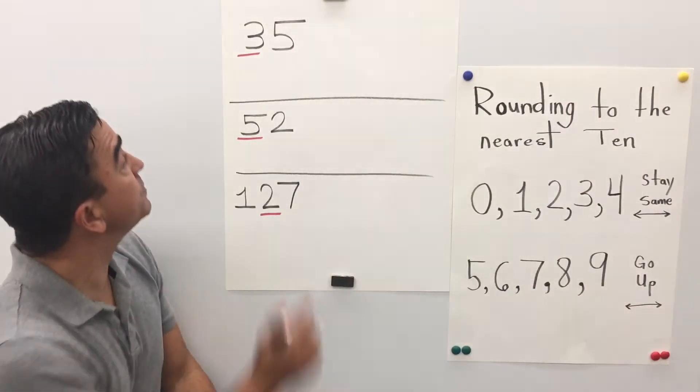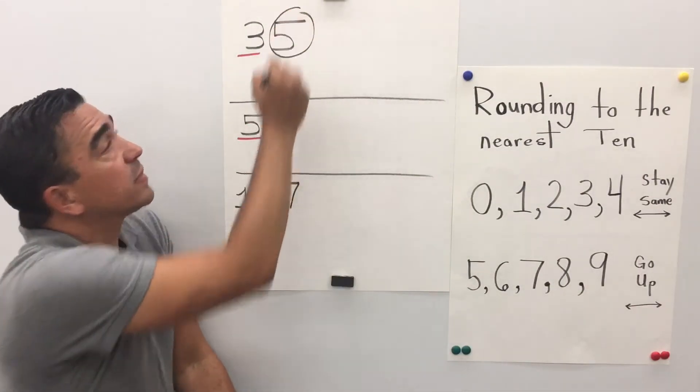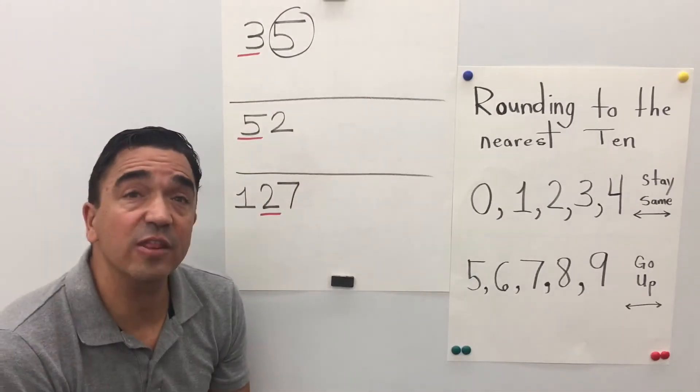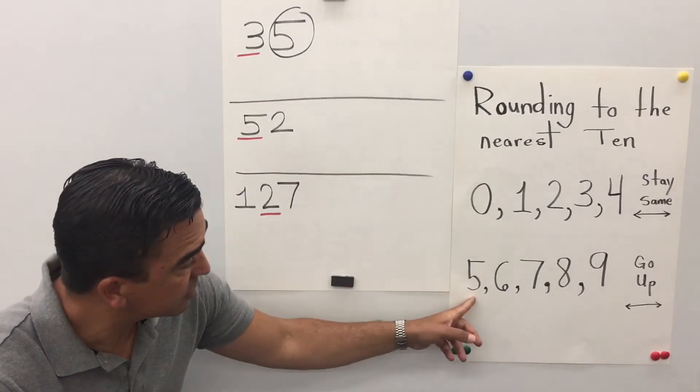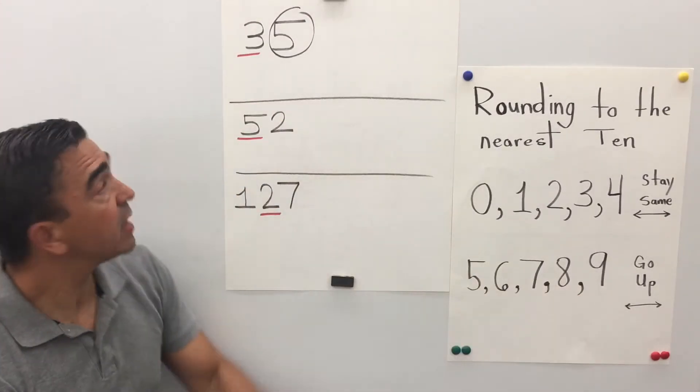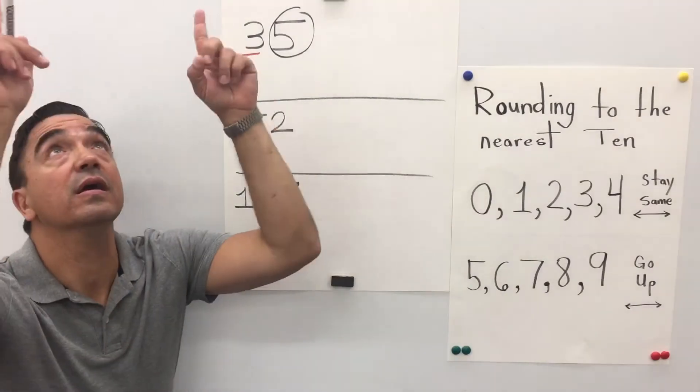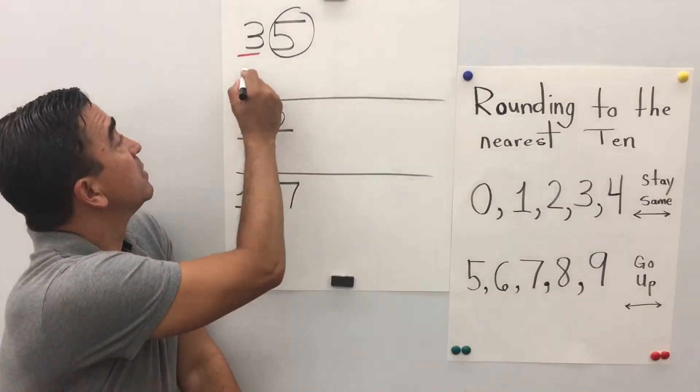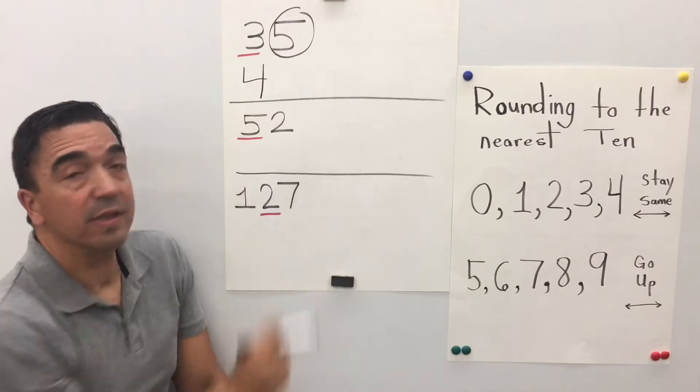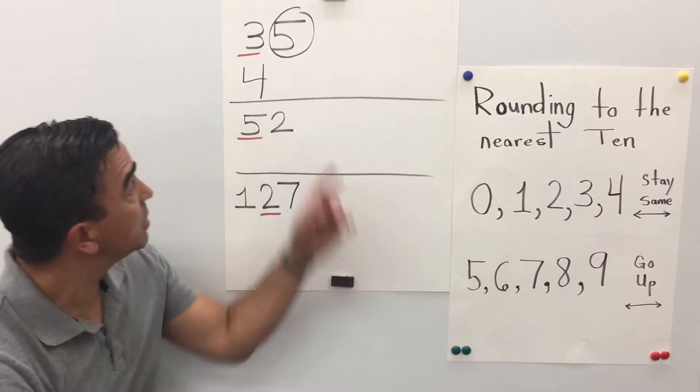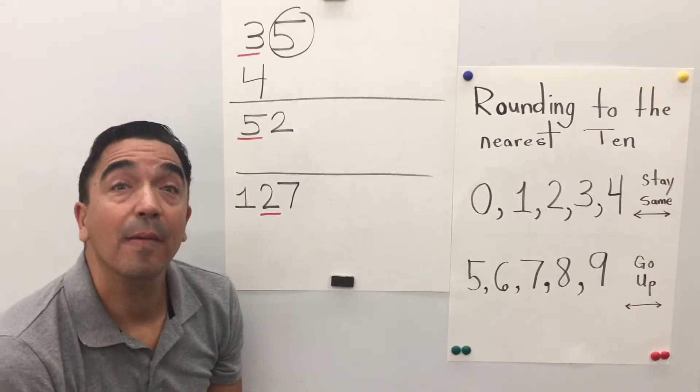Alright. So the 5 in the ones place tells the 3 to go up. And all the digits after it become 0.